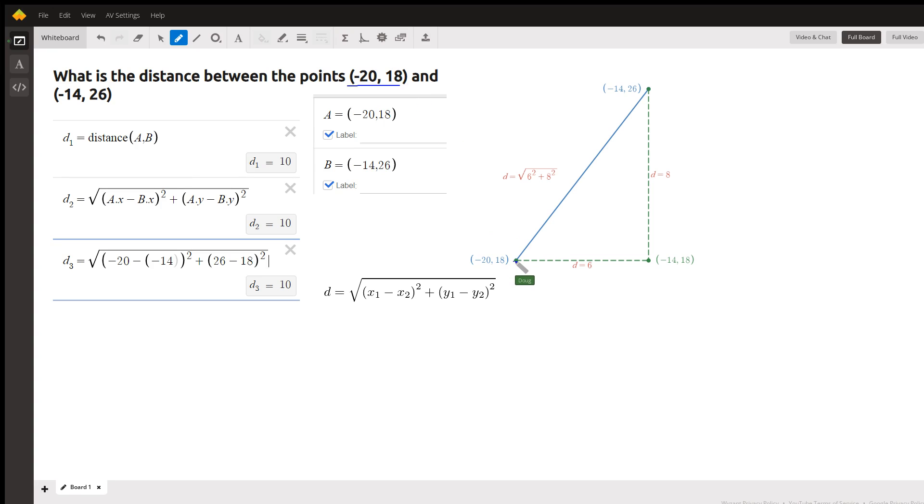Negative 20, 18 is this point, and negative 14, 26 is this point. This diagram shows you where the distance formula is coming from, and this set of rows here shows you three different ways to calculate that distance on Desmos.